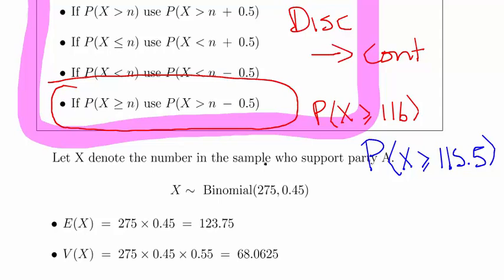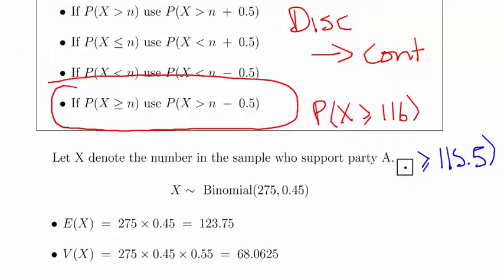Let X denote the number in the sample who support party A. I wrote over it there, but there you go, support party A, so clearly binomial. So X is distributed as binomial, 275 is the sample size, number of trials, and P, the probability of success in each trial is 0.45.